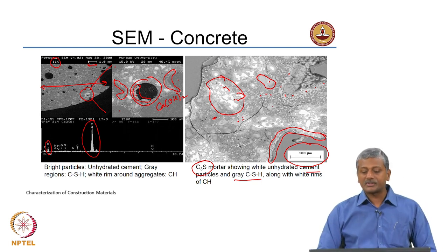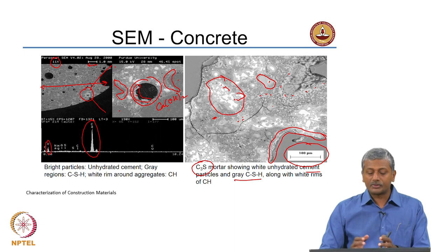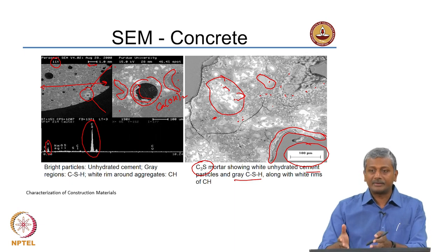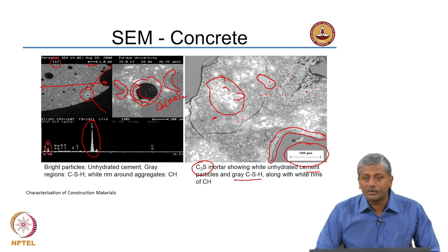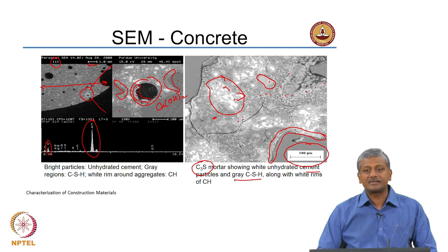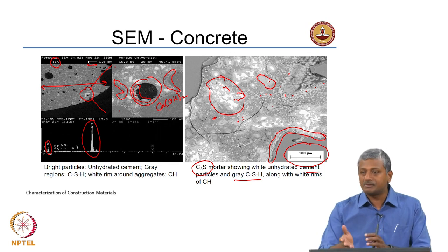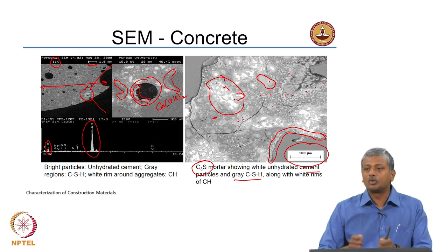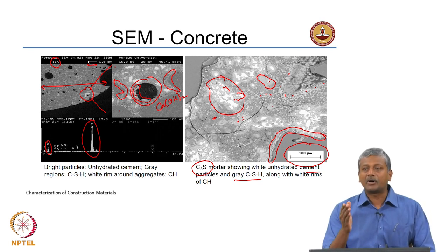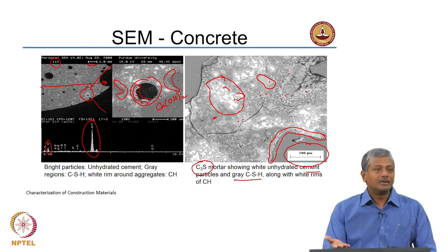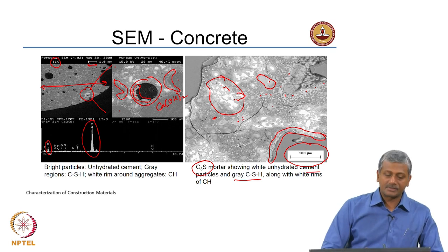You cannot directly appreciate the difference between calcium hydroxide and inner CSH in terms of grey levels in this image, but if you do a proper contrast, you will actually get calcium hydroxide very clearly apart from your inner CSH in terms of difference in grey levels.